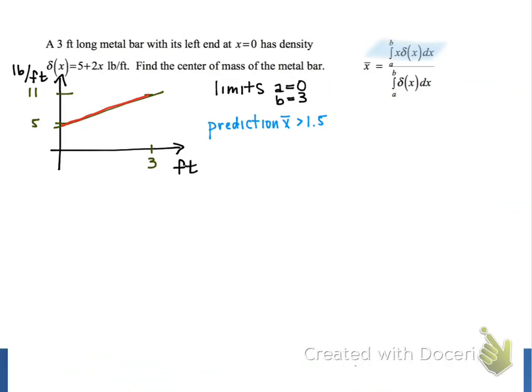To calculate x-bar, we will first evaluate the integral in the numerator of this formula. We use the integral from 0 to 3 of x multiplied by delta x, which is 5 plus 2x, and then dx. We can simplify the integrand to 5x plus 2x squared, and then we can integrate it.